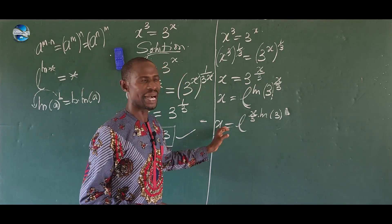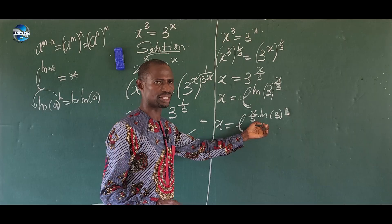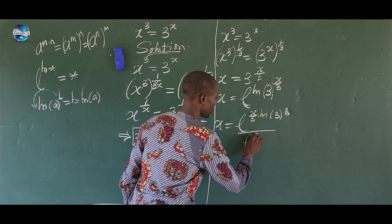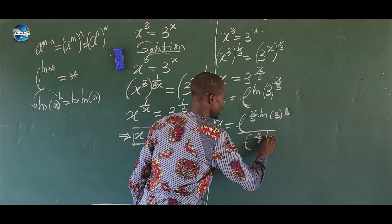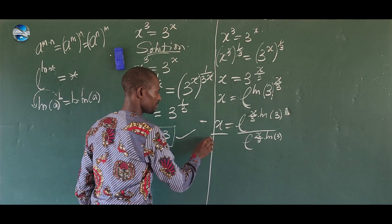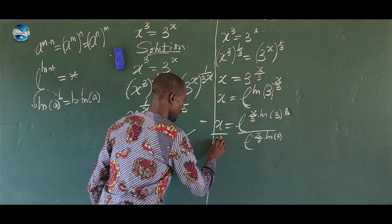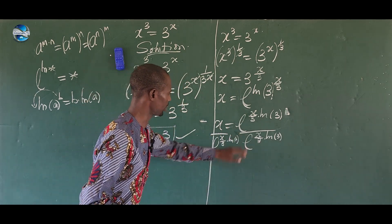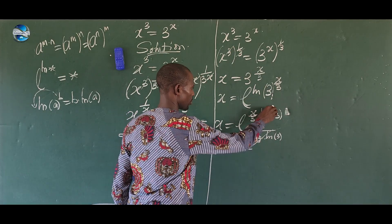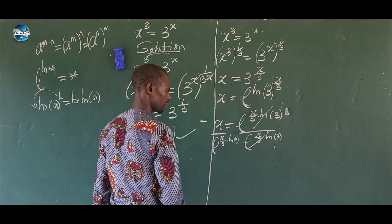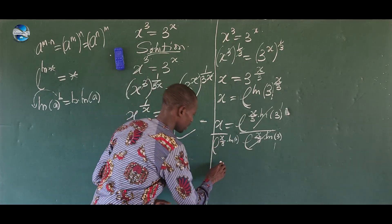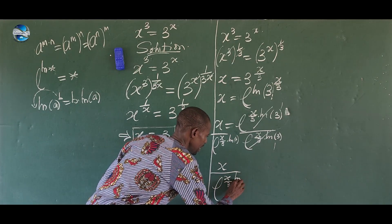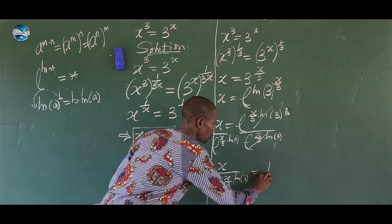Now I want to divide both sides by e^((x/3)·ln(3)) to make the right-hand side equal to 1. Dividing, the exponential term on the right cancels, leaving x divided by e^((x/3)·ln(3)) equal to 1.